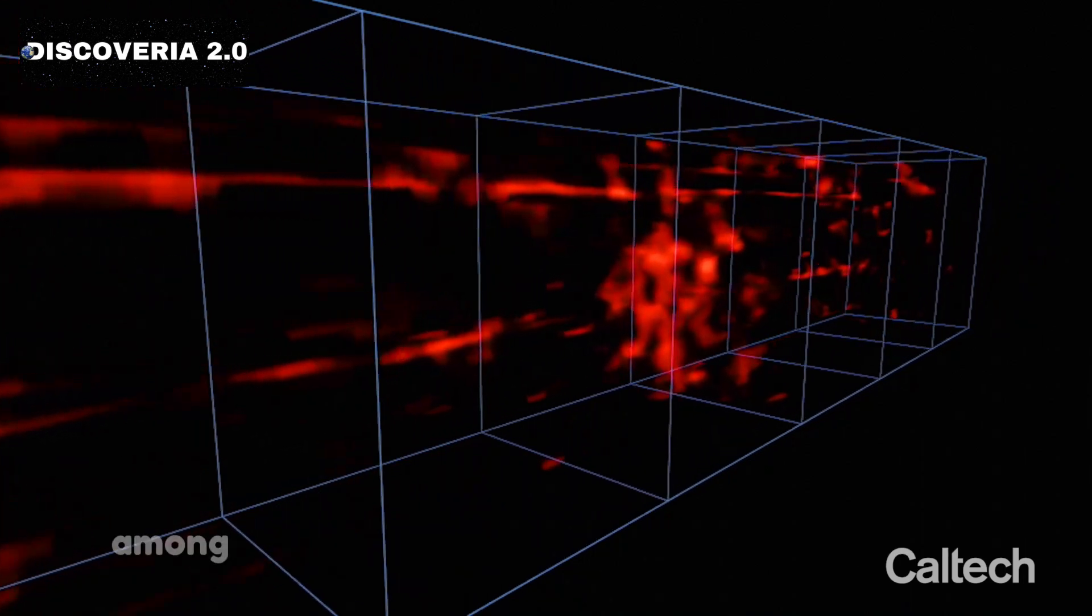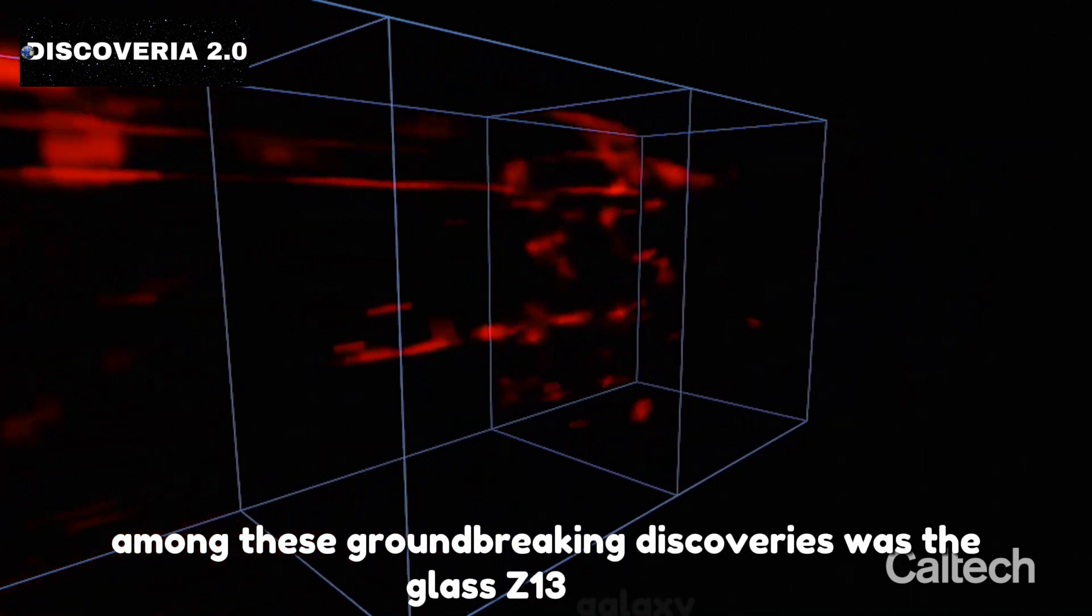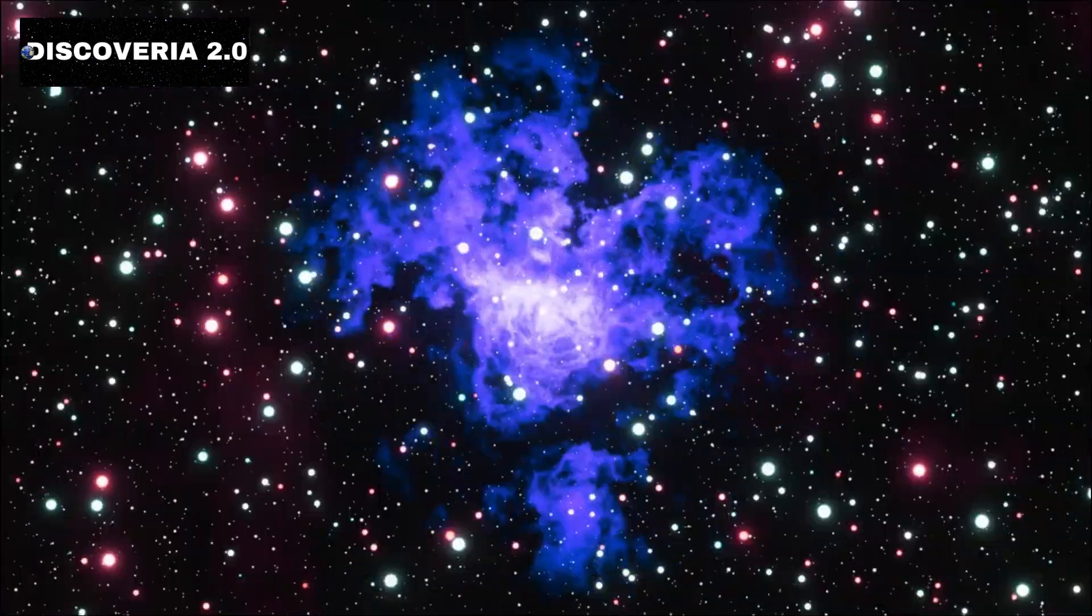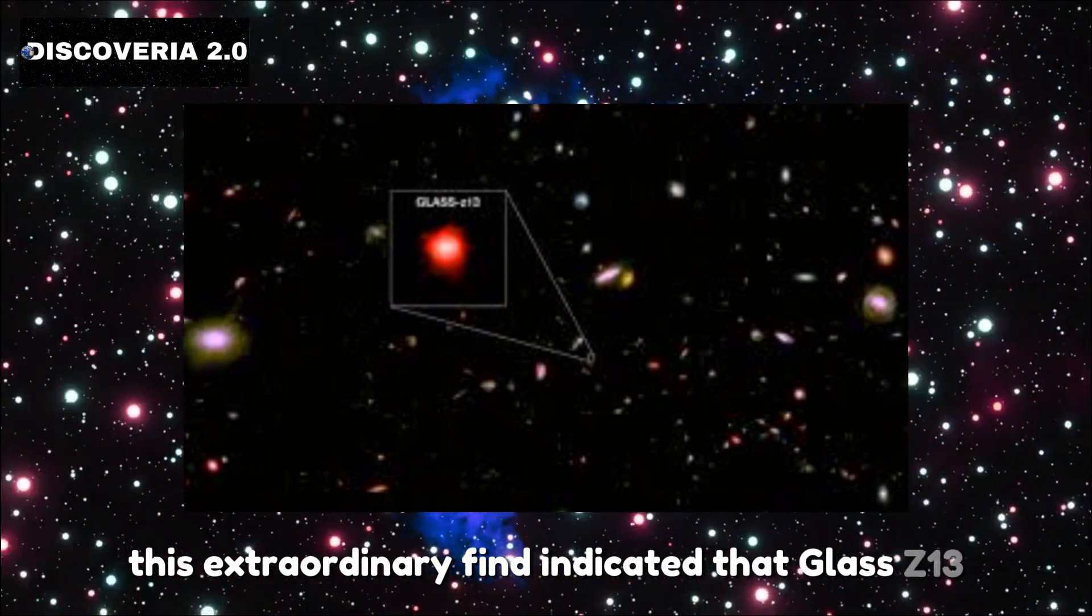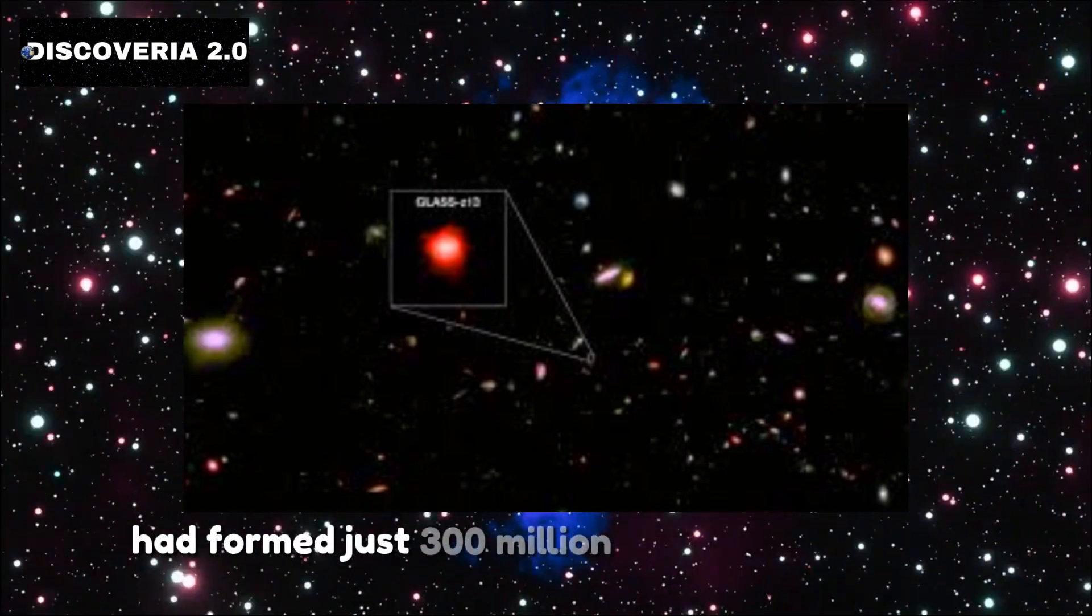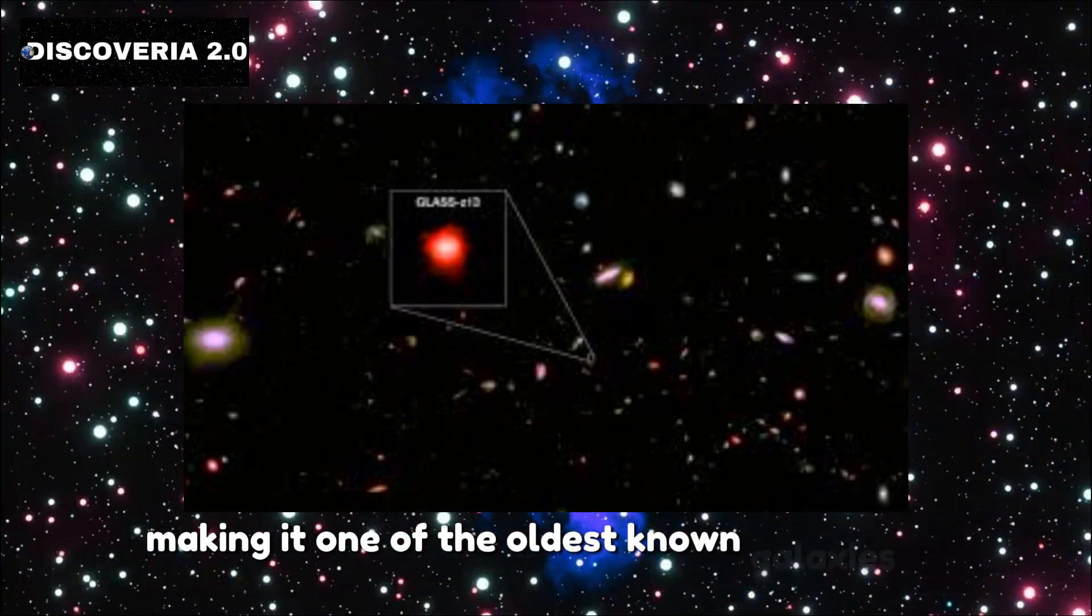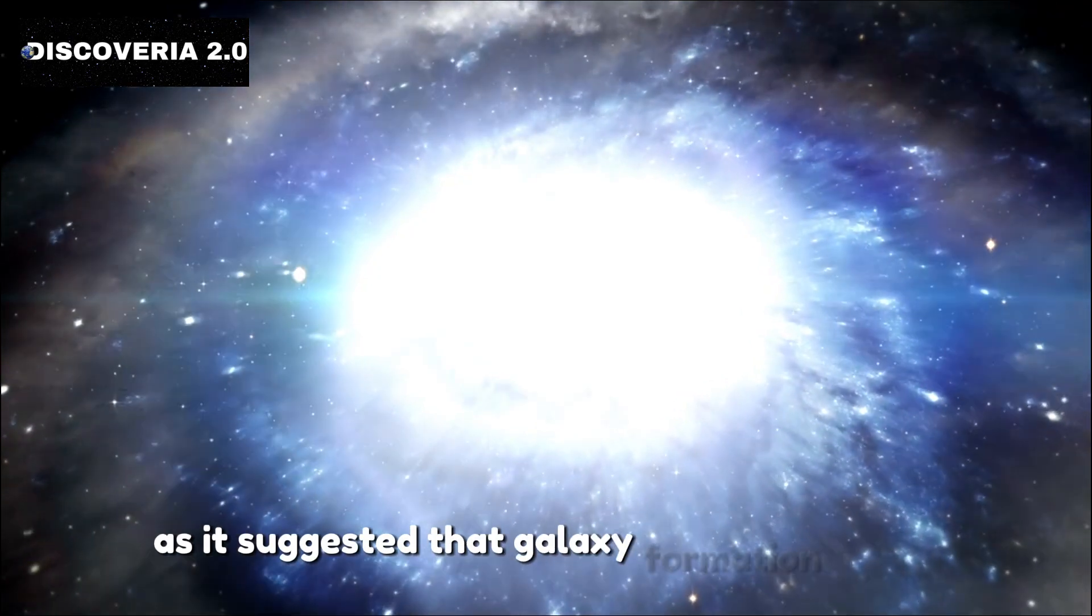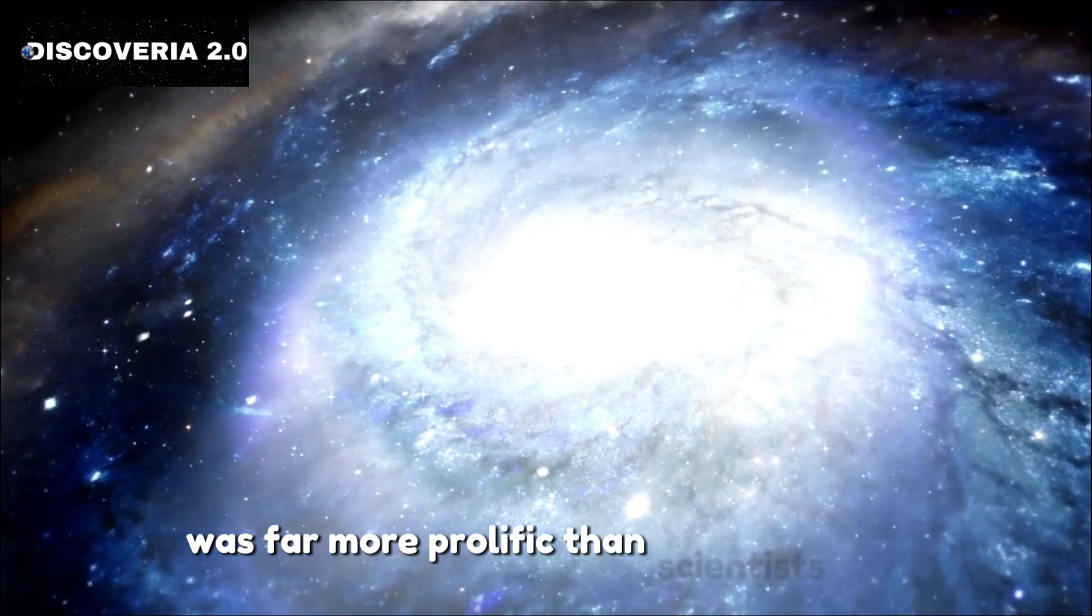Among these groundbreaking discoveries was the Glass Z13 galaxy, detected at a redshift of 13.2. This extraordinary find indicated that Glass Z13 had formed just 300 million years after the Big Bang, making it one of the oldest known galaxies in existence. The revelation was a game-changer, as it suggested that galaxy formation in the universe's early days was far more prolific than scientists had imagined.